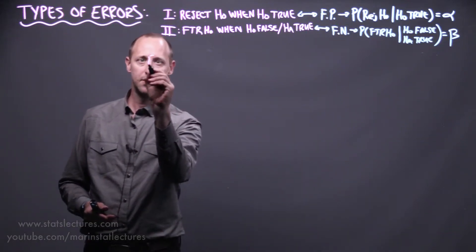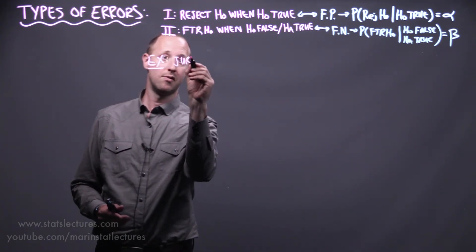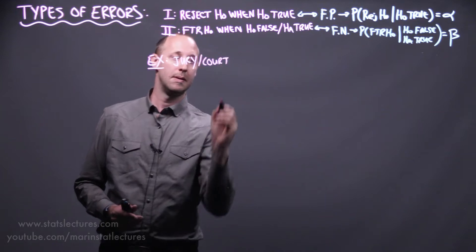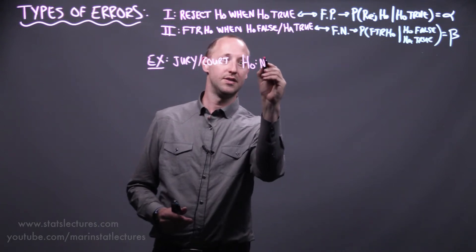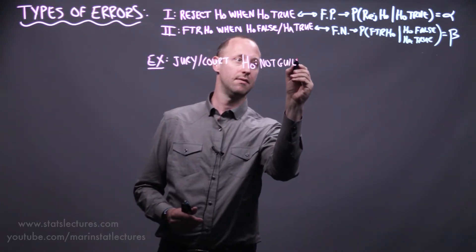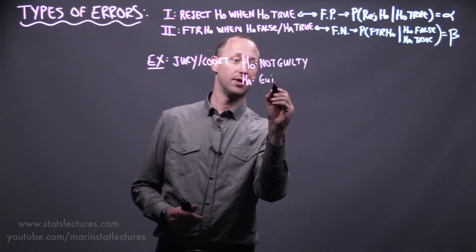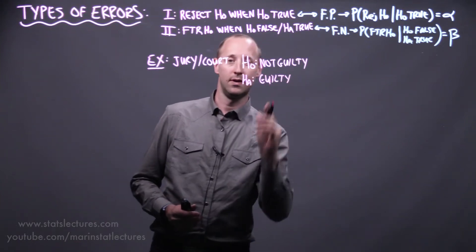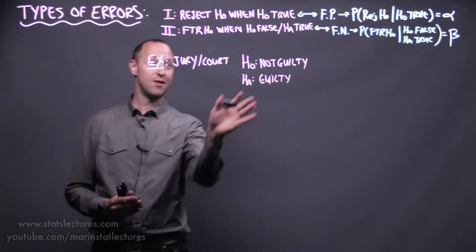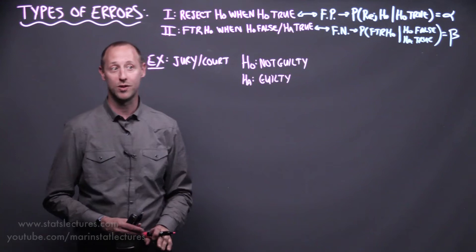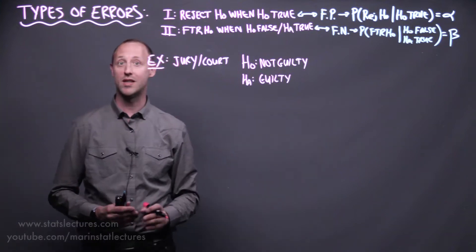The first example I'm going to bring up is a court case, or a jury. In this example, our null hypothesis is going to be that the individual is not guilty, and the alternative hypothesis is that they're guilty. We'd start this trial by assuming they're not guilty, looking at the evidence and seeing if we can provide evidence against that, at which point we'd say we believe they're guilty. Or the evidence may be too weak, and we fail to reject the null and find them not guilty.